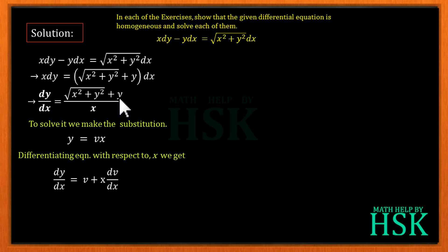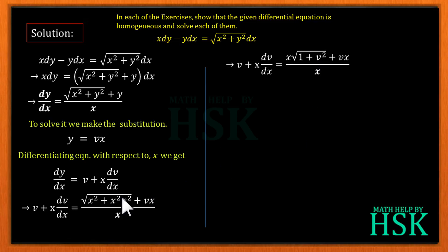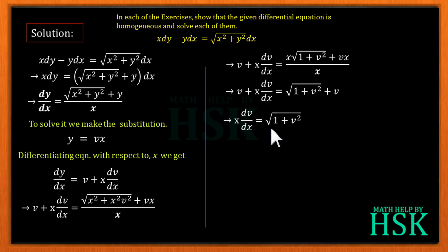Substituting y = vx, we get v + x(dv/dx) = (√(x² + x²v²) + vx) / x. Taking x² common inside the square root gives x√(1 + v²), and taking x common from the numerator, it cancels with the x in the denominator. So v + x(dv/dx) = √(1 + v²) + v. The v's on both sides cancel, giving x(dv/dx) = √(1 + v²).